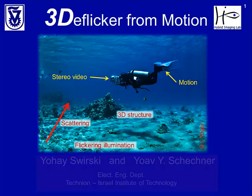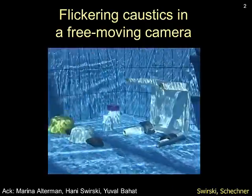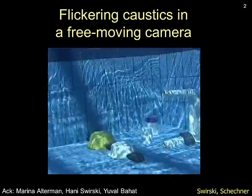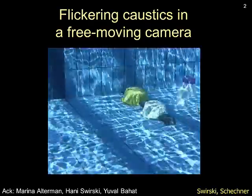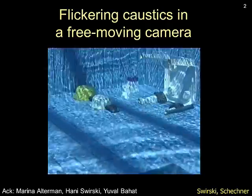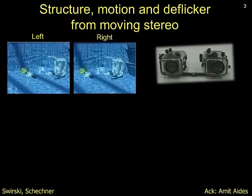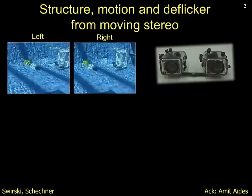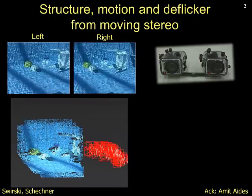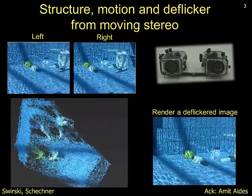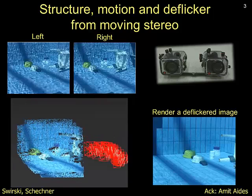To better understand the problem, let's look at this scene captured in a swimming pool. The strong flicker variations make it very difficult to estimate camera motion and to stabilize the video. Known methods that rely on feature points would find it very difficult to extract real object feature points. But by combining simultaneous stereo videos, we can estimate the motion of the stereo rig, estimate a dense 3D structure, stabilize the video, and even render images without flicker. We term this process 'de-flickering.' This is the bottom line of this work.